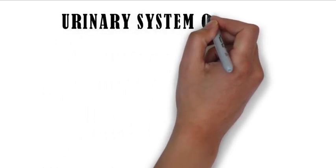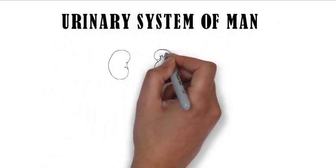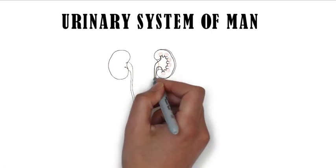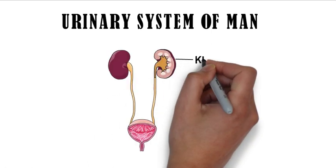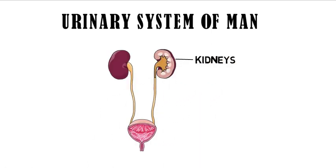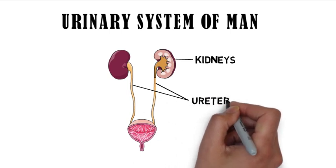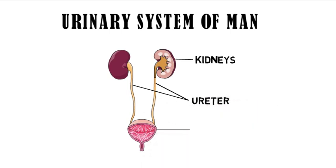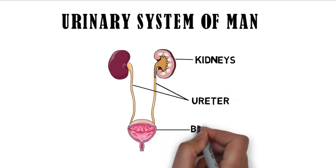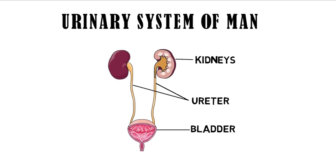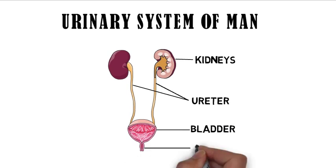The human urinary system consists of a pair of kidneys, which are bean-shaped structures that form the urine. Ureters are tube-like structures that carry urine to the bladder from each kidney. The bladder is the site where urine is collected and stored until urination. The urethra carries urine from the bladder to the external environment.